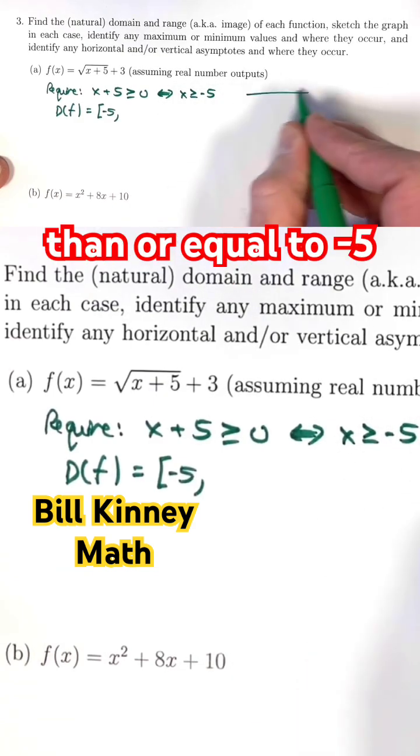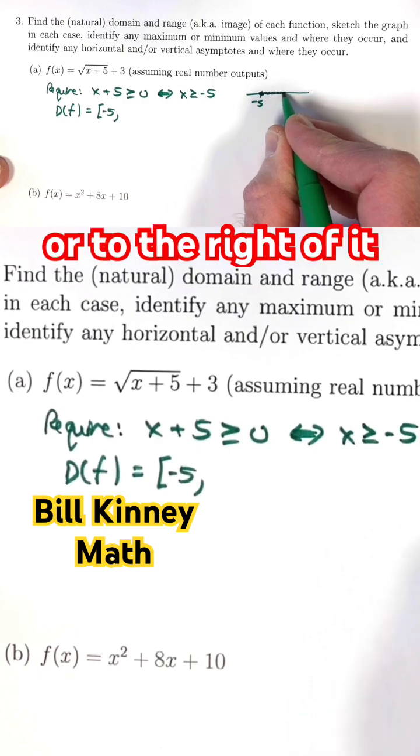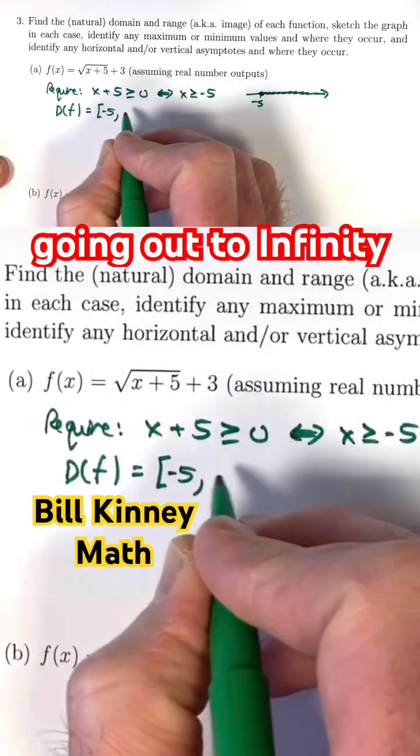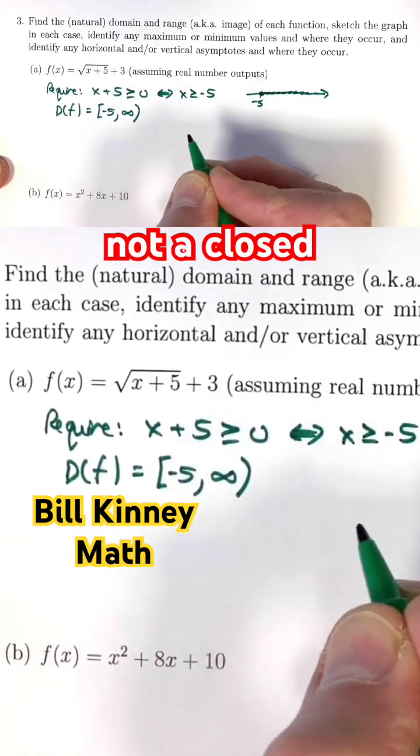x being greater than or equal to negative 5 means on a number line, we are at negative 5 or to the right of it, greater numbers than negative 5 forever, going out to infinity. I'll put an infinity symbol here and a parenthesis, not a closed bracket there.